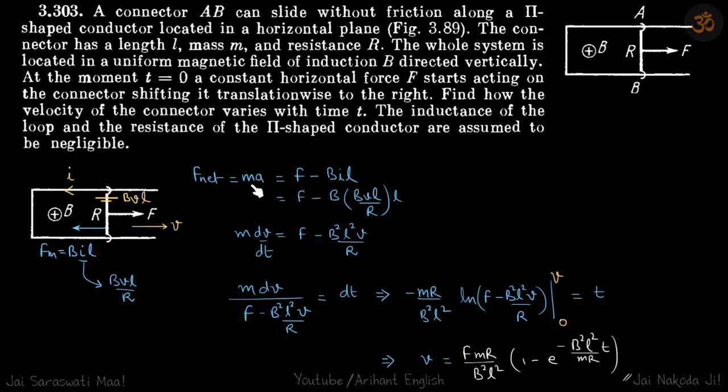Now net force we can write as MA is equal to F minus BIL. I is BVL by R, and A I can write as DV by DT because we need the relation of velocity with time.